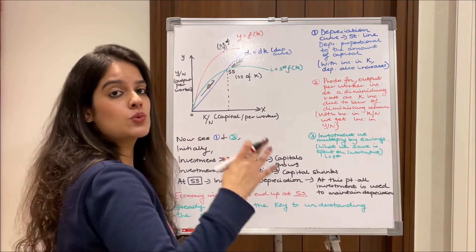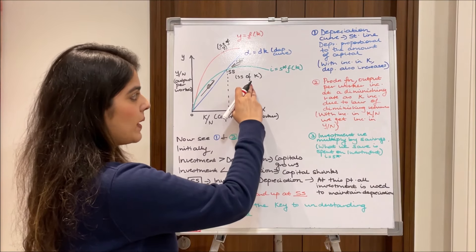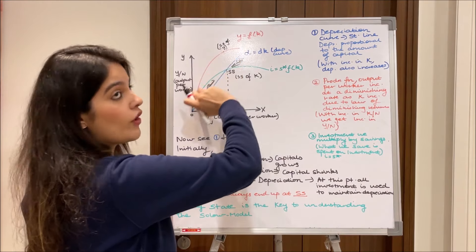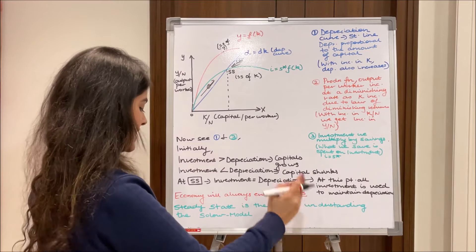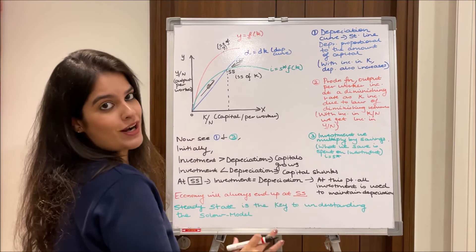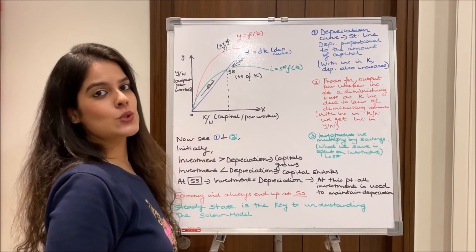And thus we have the steady state of capital and corresponding to it above we have the steady state of output on the red line. So basically an economy will always end up at the steady state and steady state is the key to understanding the Solow model. So this is basically the crux or you can say the fundamentals of the Solow model.